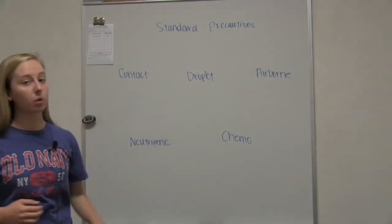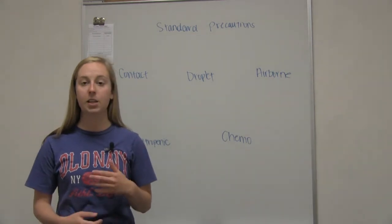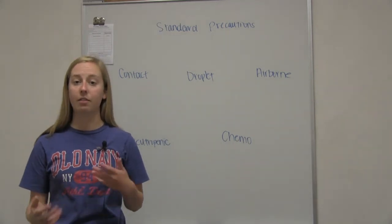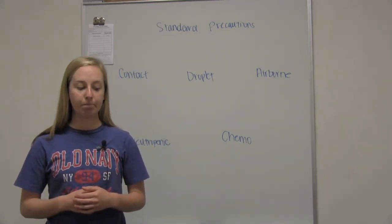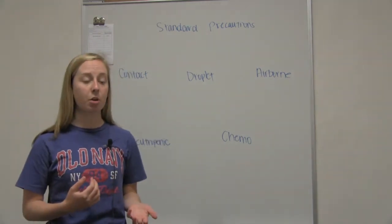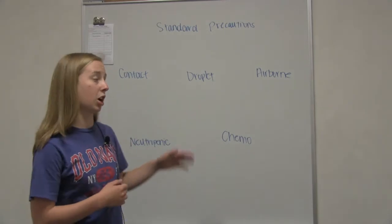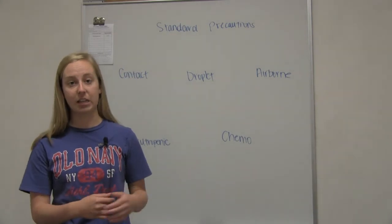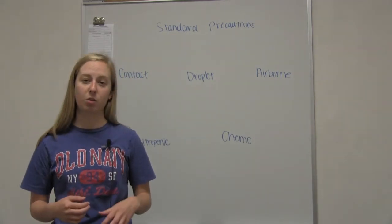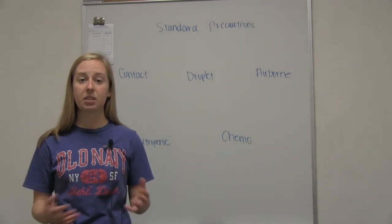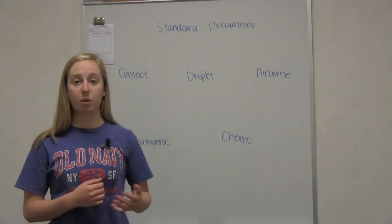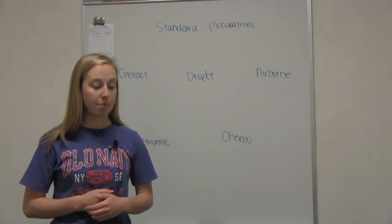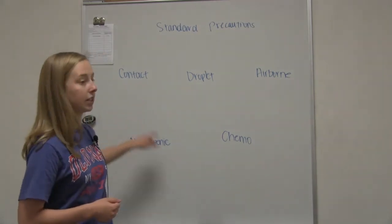Contact precautions are for people who have MRSA, VRE, scabies, or wounds or abscesses with a lot of uncontained drainage. Make sure you're not taking anything in and bringing it back out without disinfecting it. Your patient needs a private room or a room with somebody who's got the same disease. We don't want to spread infection to other patients. Make sure you're wearing gown and gloves for contact precautions.